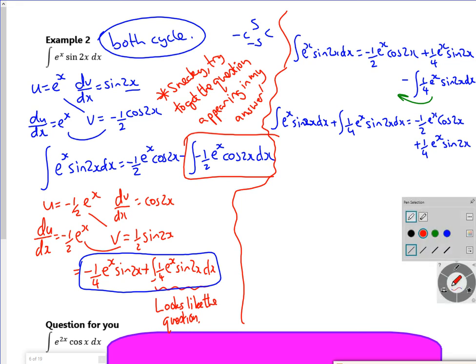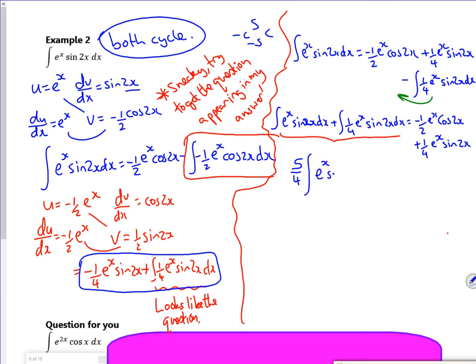Are you okay so far? So I've just put these. I've got the answer in terms of the question. And then I've moved the question over. So on the left hand side I've got one lot of the question plus a quarter lots of the question. So I've actually got 5 over 4 lots of the question.